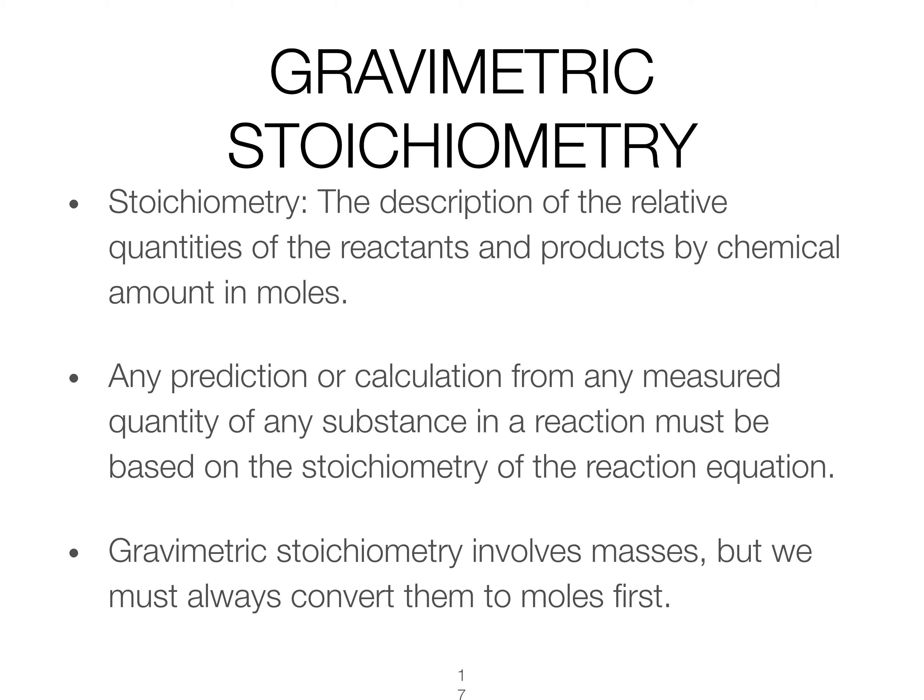Stoichiometry is always about describing the relative quantity of reactants and products in terms of ratios of moles. Any prediction or calculation we do during a chemical reaction has to be based off of that mole ratio, but often we don't actually measure moles. Trying to measure moles directly is really quite difficult.